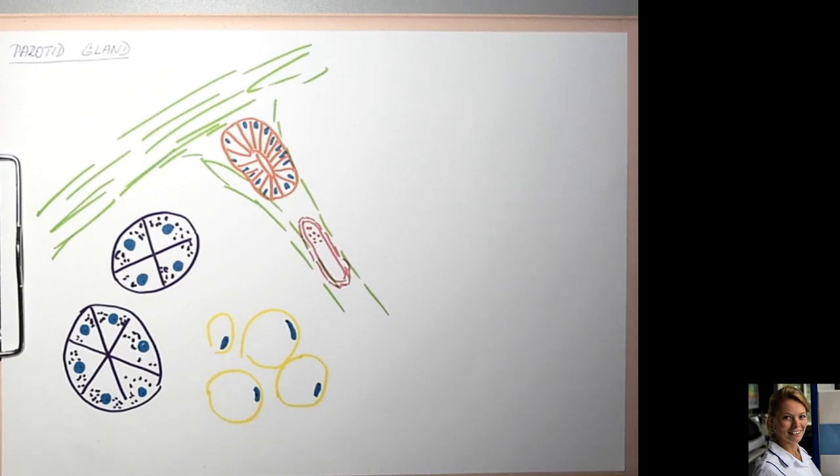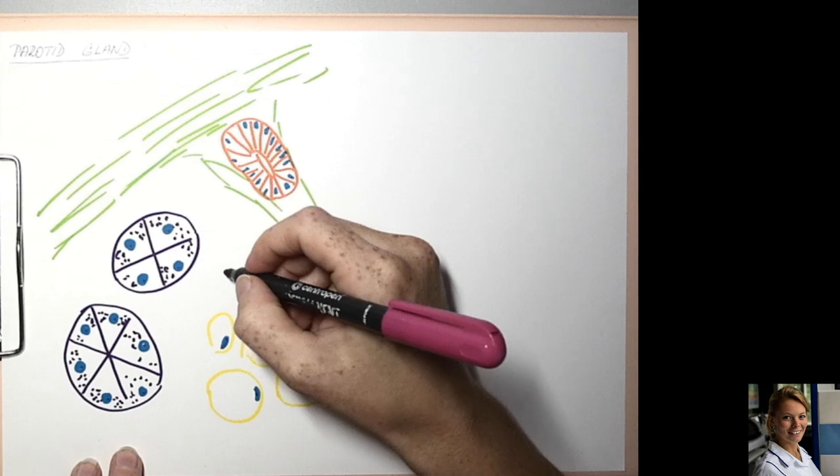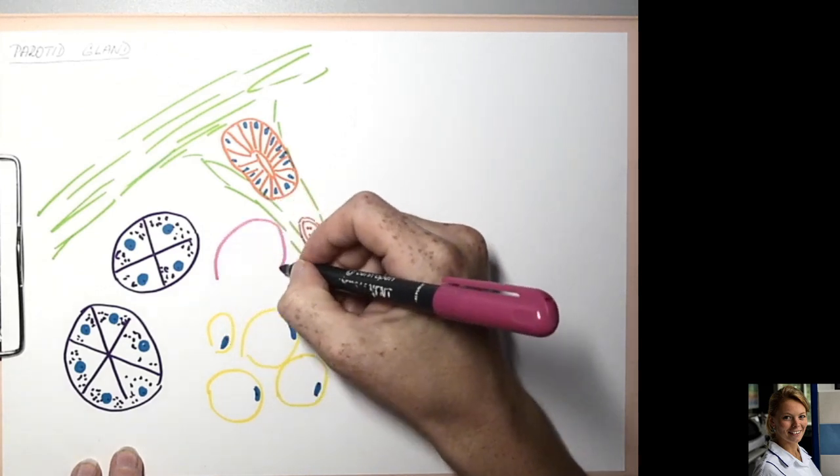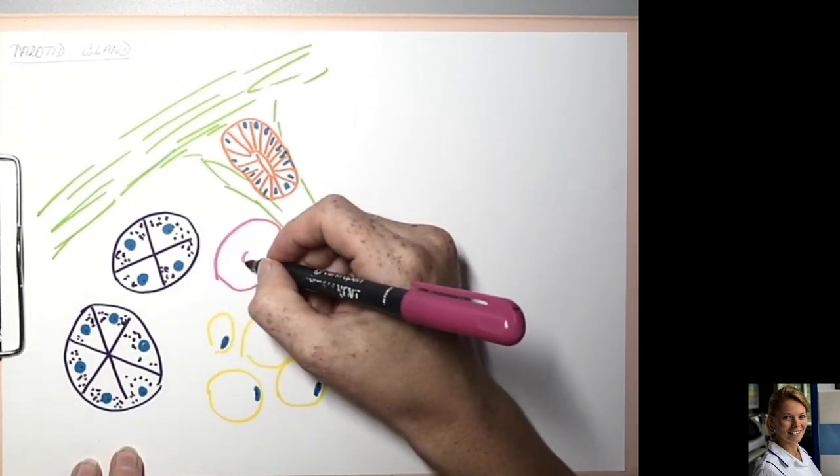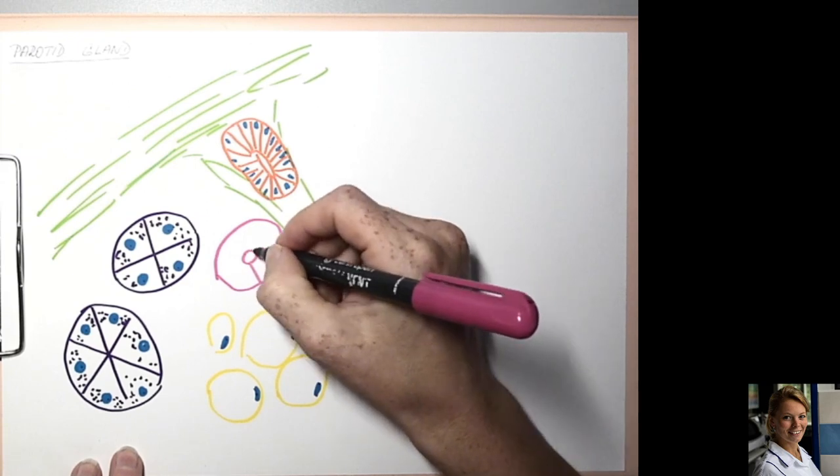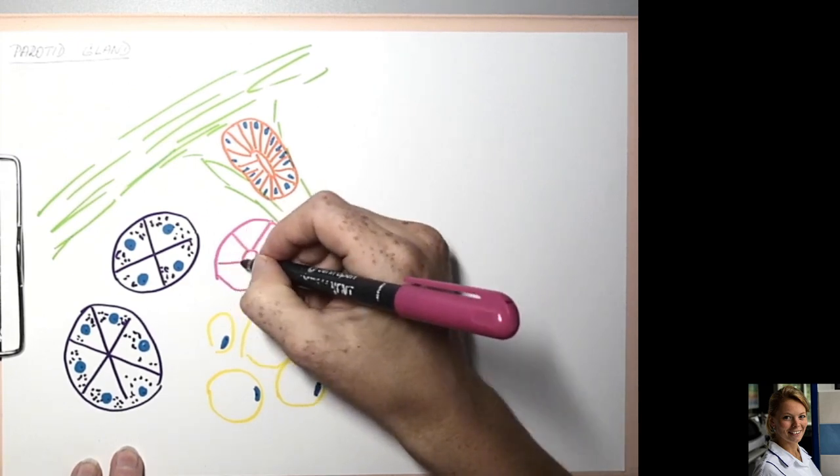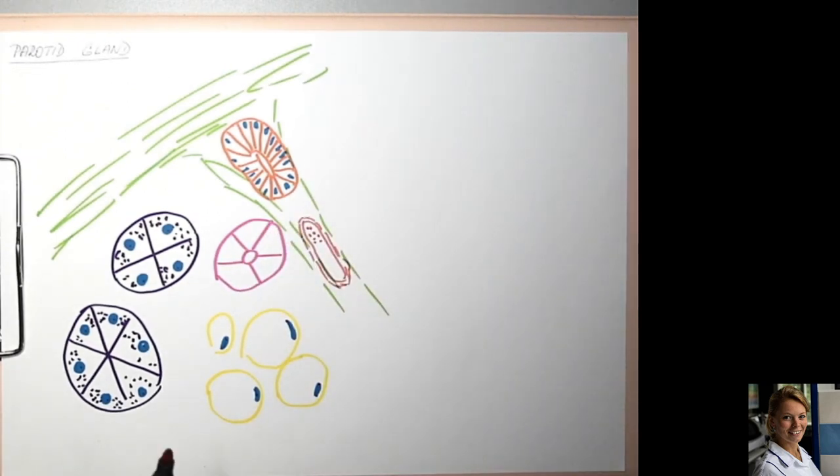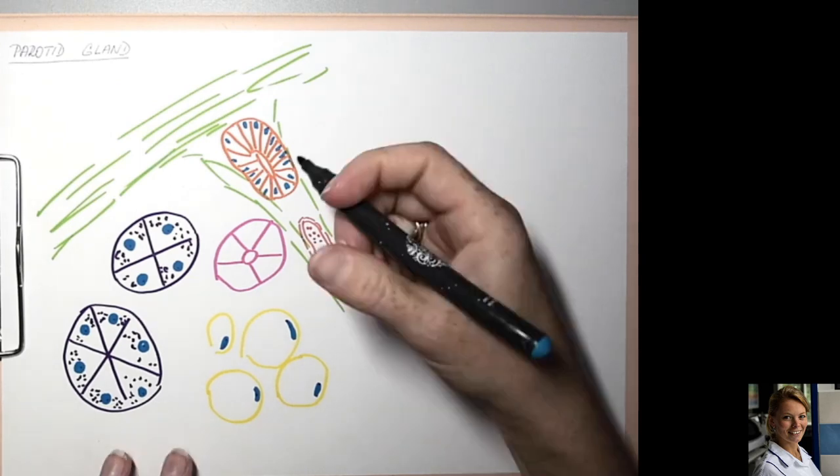In the lobules of parotid glands there are striated ducts which are lined by simple cuboidal epithelium. The cuboidal cells have round nuclei.